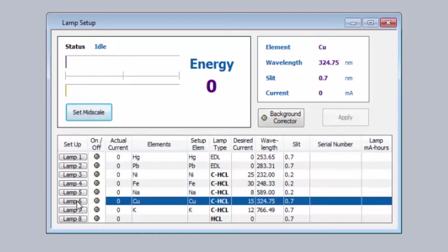In the setup column, click on the lamp number for the lamp that you want to align. Since the lamps are element coded, the system sets the recommended values for the lamp. Wavelength, slit width and lamp current are all set.